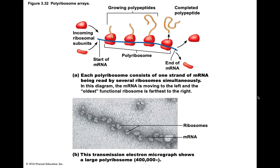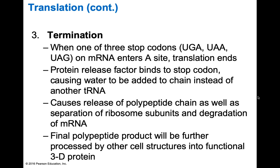Once the A site is empty after translocation, a new tRNA can enter and the cycle repeats. During termination, when one of the three stop codons — UGA, UAA, or UAG — enters the A site, translation ends. Protein release factors bind to the stop codon, causing water to be added to the chain instead of another amino acid, because you're already done creating your protein. This causes the release of the polypeptide chain as well as the separation of the ribosomal subunits. The mRNA is then degraded and all the pieces get recycled for use in another protein synthesis process.